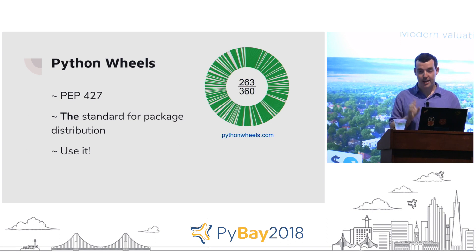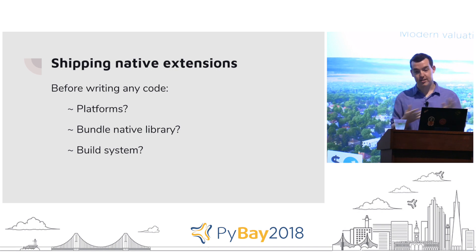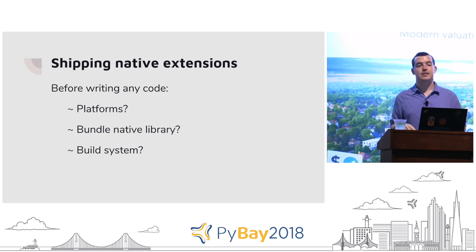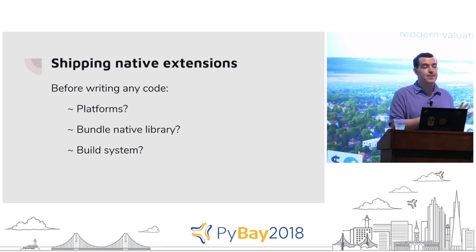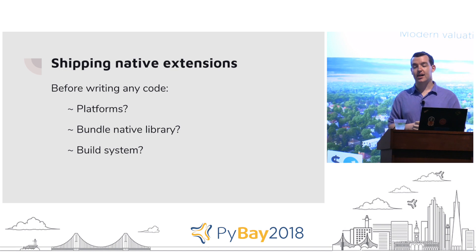Some other things to think about: consider platforms — both operating system and Python version. Are you going to bundle a native library? If you're writing a ctypes wrapper to a native shared library — that's .so on Linux, .dylib on Mac, .dll on Windows — maybe you want to distribute that in your package so users don't need to install it themselves. Also consider what your build system is going to be, since building a Rust extension looks quite different from a C extension.